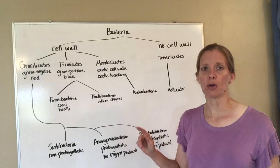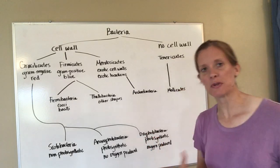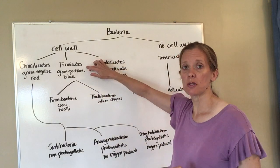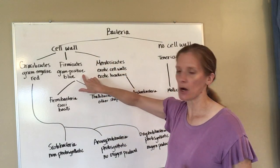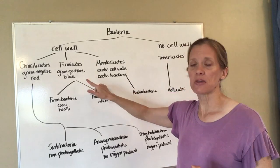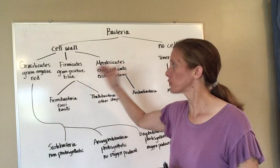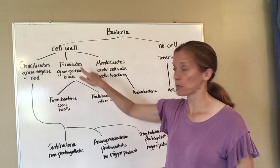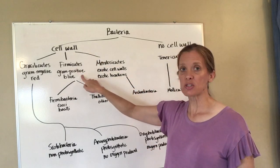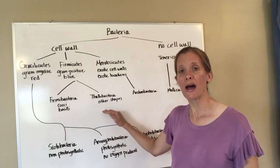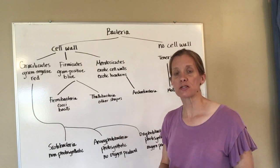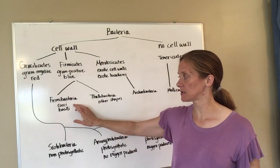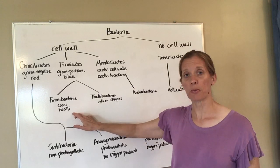The other two require a little more creativity in coming up with memory tips. Let's start with Firmicutes first. Remember this is the one where I said 'I am positive that I am going to turn blue and freeze to death and my body is going to become firm' — that's how we remember that phylum. This phylum is broken down into two different classes, and the classes are based on what shape the bacteria are. Fermibacteria is divided into the cocci and the bacilli.